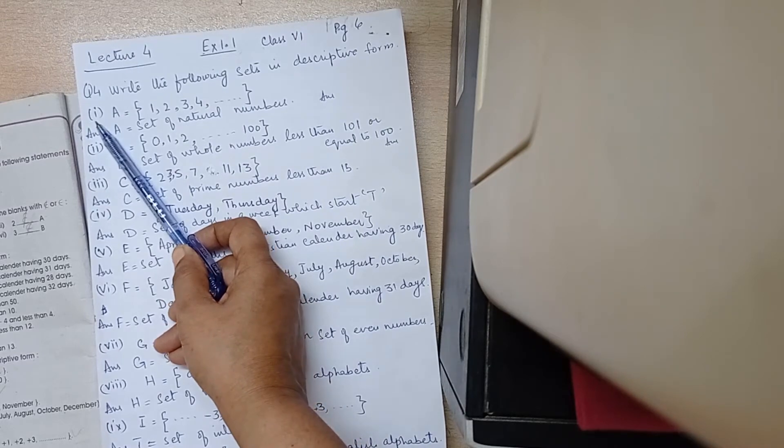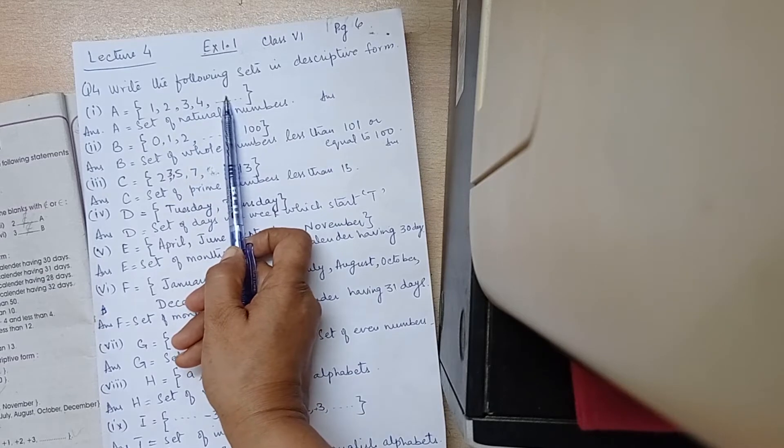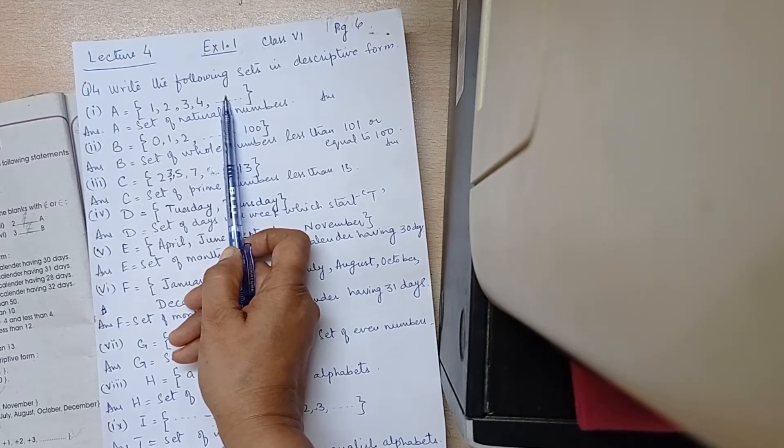Part 1, A is equal to 1, 2, 3, 4 and so on. This set is in tabular form.